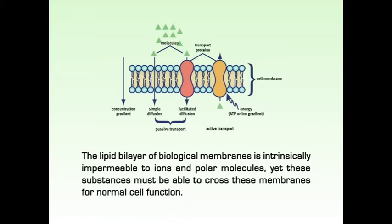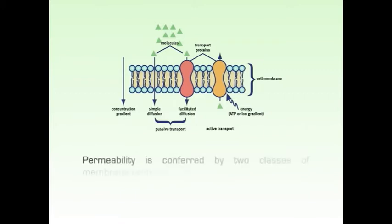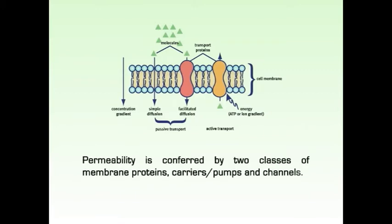and polar molecules. Yet these substances must be able to cross these membranes for normal cell function. Permeability is conferred by two classes of membrane proteins: carriers or pumps and channels.